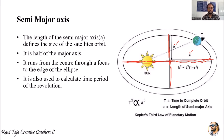The half of the major axis — from the center point to the edge of the ellipse — is the semi-major axis. It is also used to calculate the time period of revolution: how much time a smaller body takes to complete one revolution around the larger body.